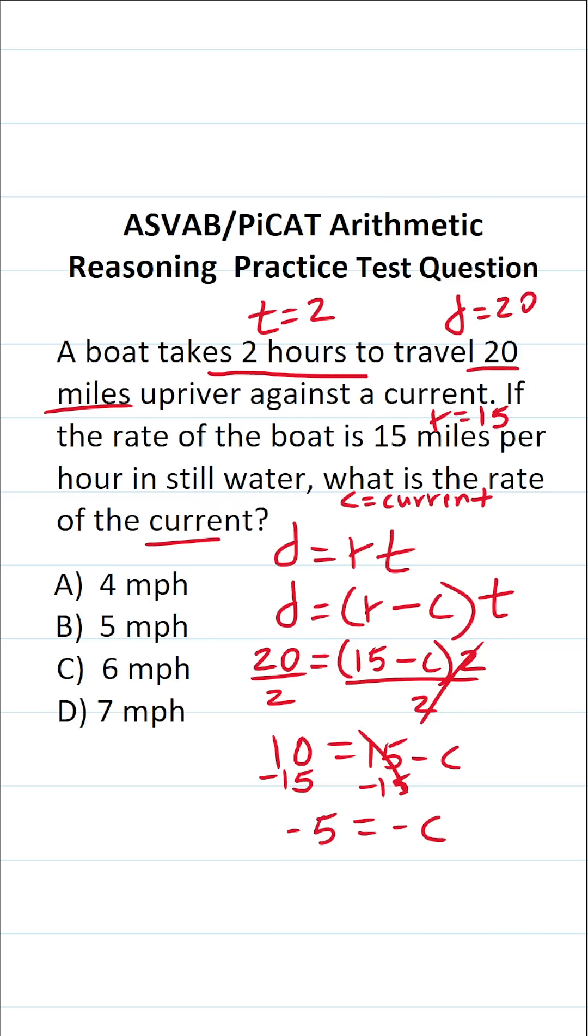We want to know the speed of the current, so we just want C, not negative C. To make C positive, we're going to divide it by negative 1. Negative divided by a negative is a positive. So C equals negative 5 divided by negative 1, which is going to be positive 5. We know the rate of the current is going to be B, 5 miles per hour.